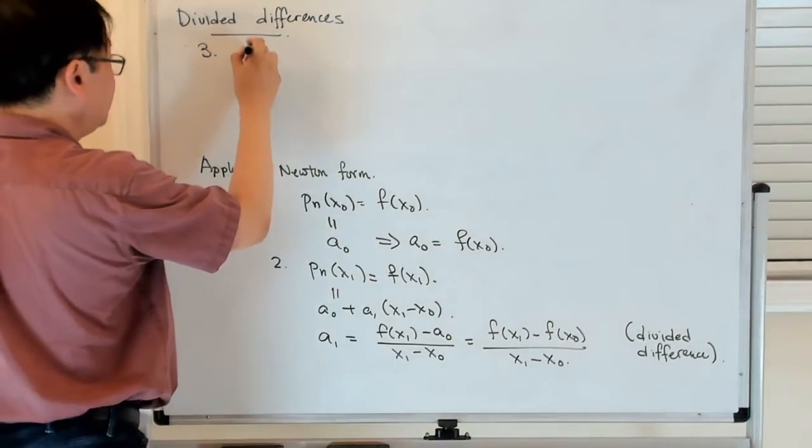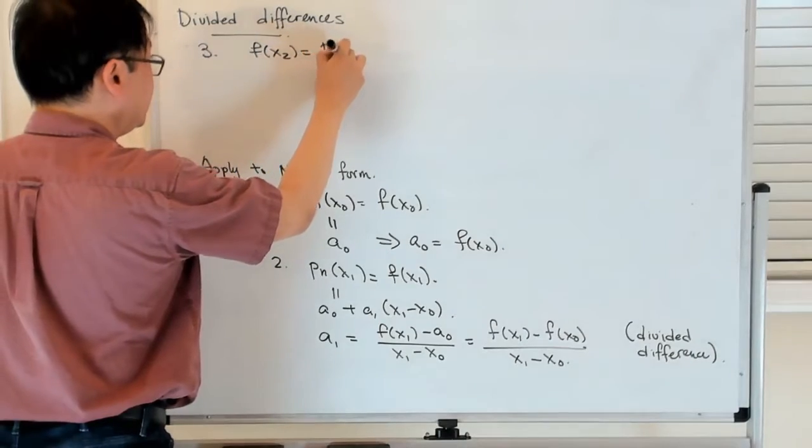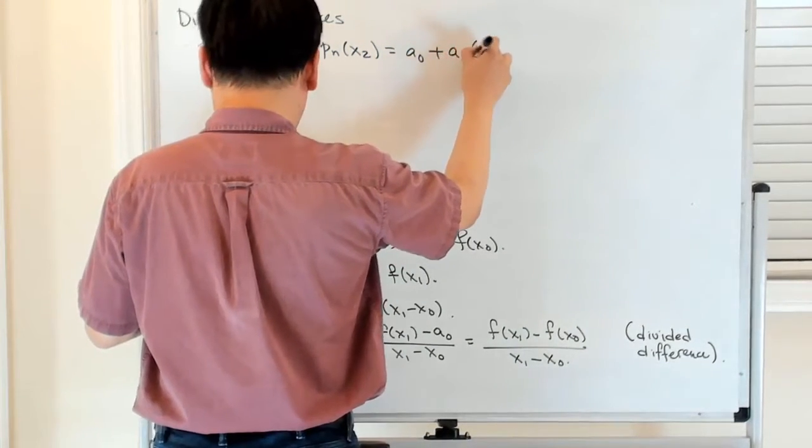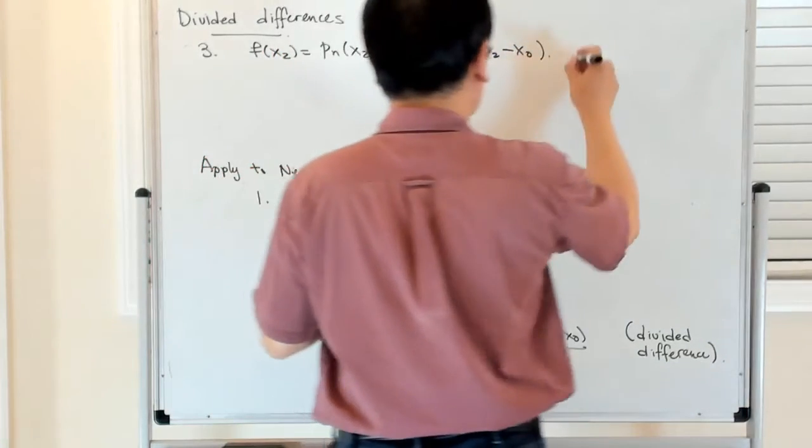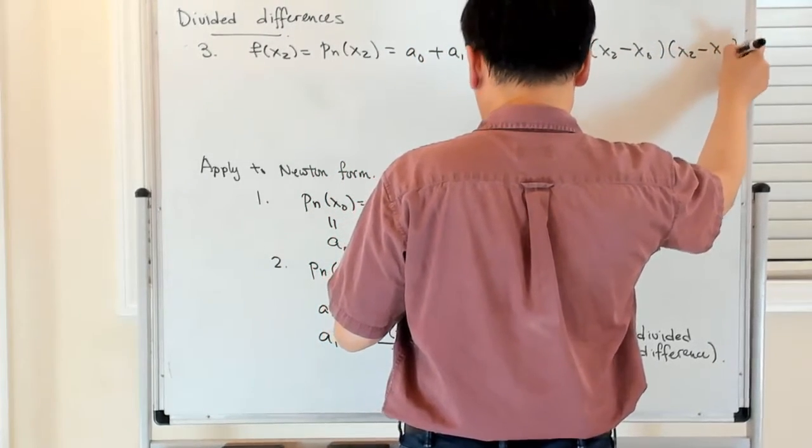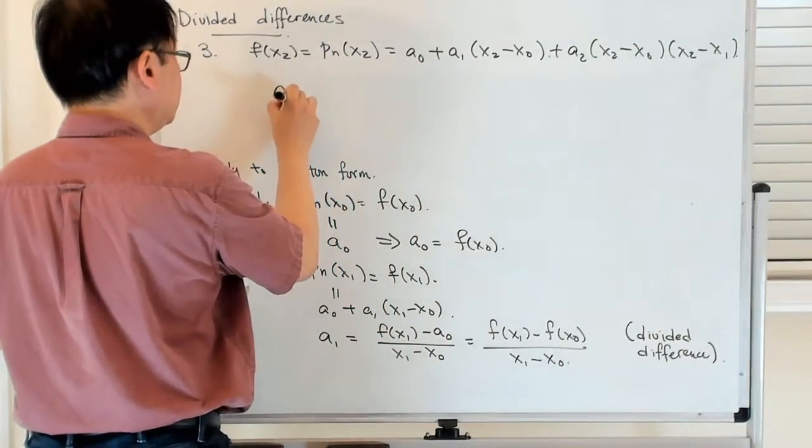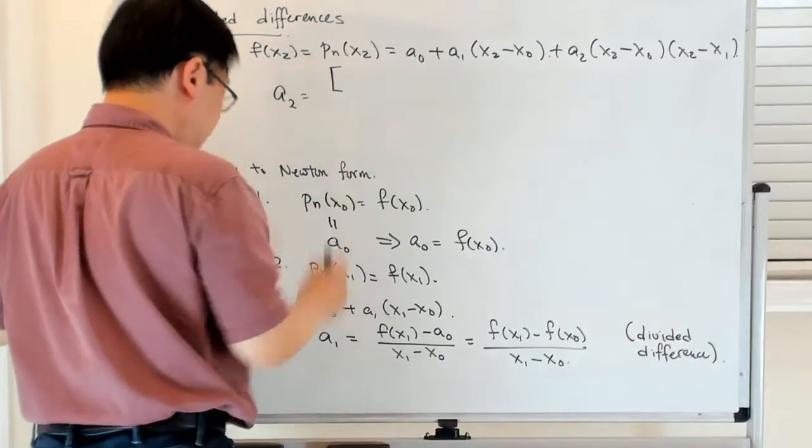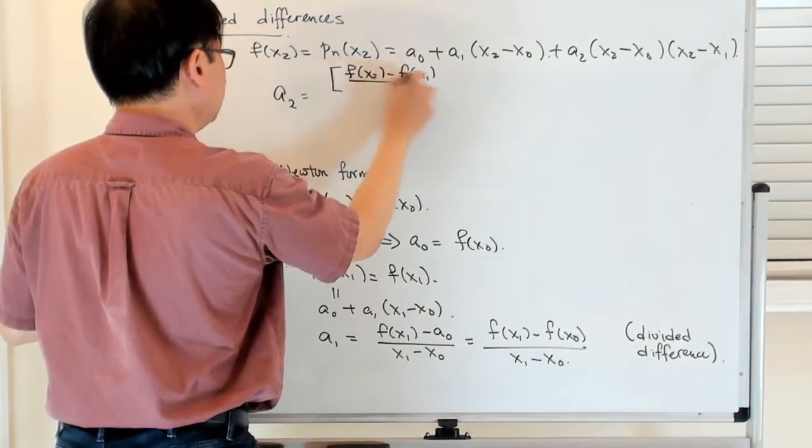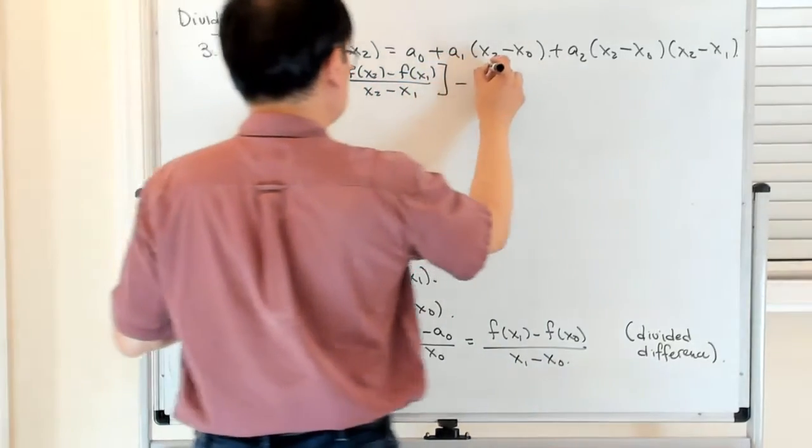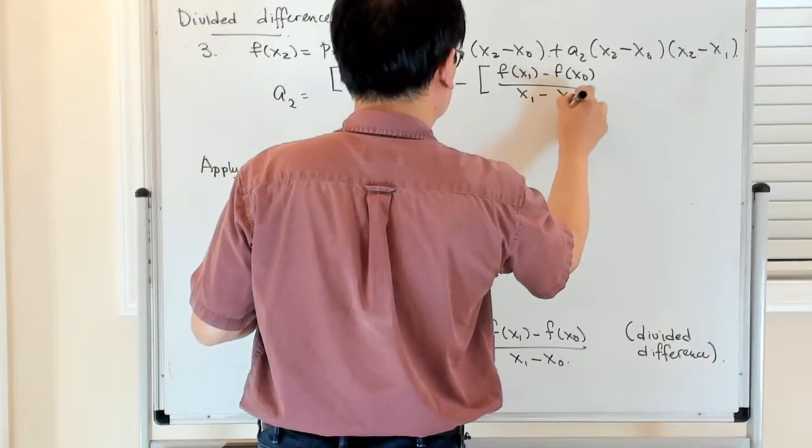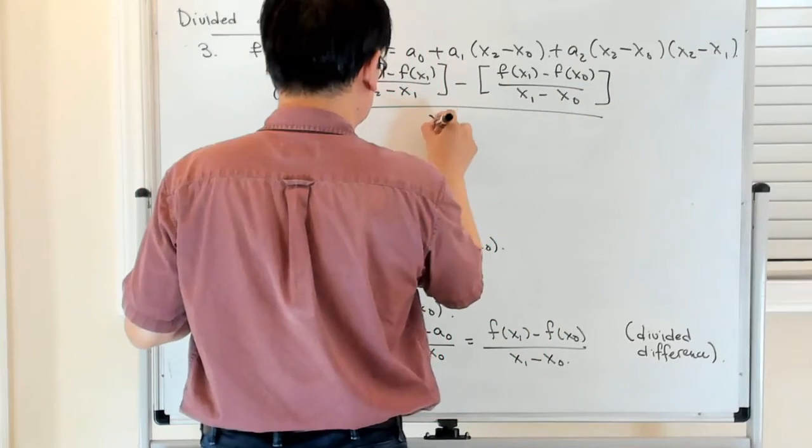So again I want f(x2) to be Pn(x2). Pn(x2) is equal to a0 plus a1(x2 - x0) plus a2(x2 - x0)(x2 - x1). And I can solve for a2. a2 looks like the following. I'm going to write this in a rather suggestive form. So, [f(x2) - f(x1)] / (x2 - x1) minus [f(x1) - f(x0)] / (x1 - x0), all divided by (x2 - x0).